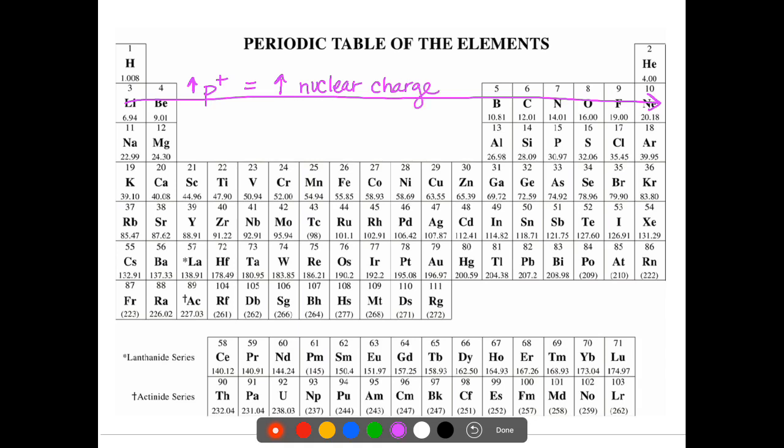Now with that, it's important to notice that in that same period, the electron distance stays the same for that particular period. So the effective nuclear charge actually increases as well from left to right. So electron distance is the same across the period. Keep that in mind.